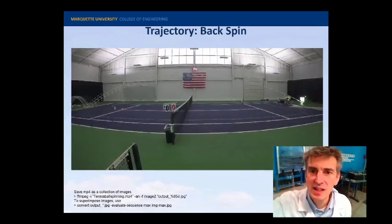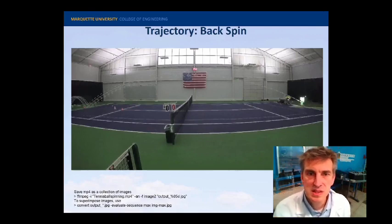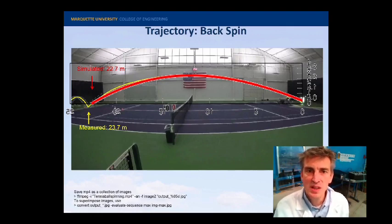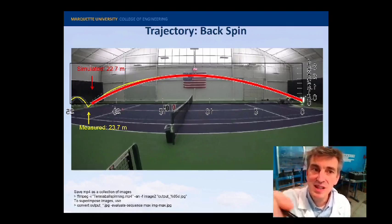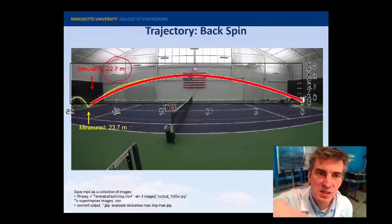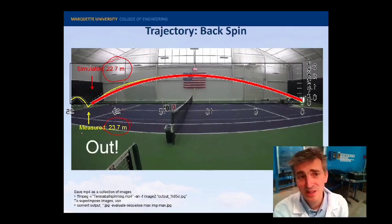Here's our backspin trajectory. Again, I've superimposed a lot of the shots so that you can see where the ball traveled. And I'm just going to draw over it and overlay the simulation. So, again, it's quite good. I get 22.7 predicted versus a 23.7 measured. And that ball was definitely out.